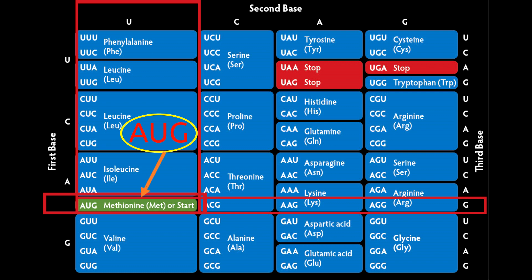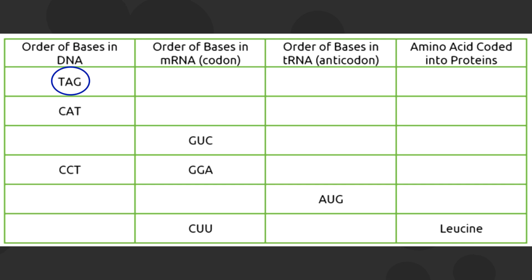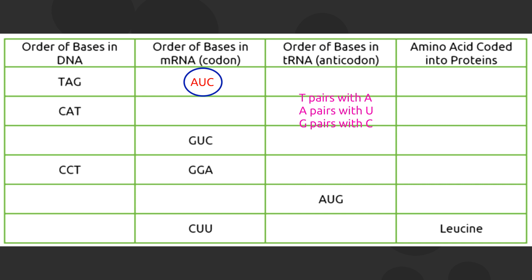The first given in the table is TAG. The order of bases in DNA is TAG, and the order of bases in mRNA is AUG. We always remember that thymine pairs with adenine, adenine pairs with uracil, and guanine pairs with cytosine. That is why the answer for the mRNA codon is AUG.